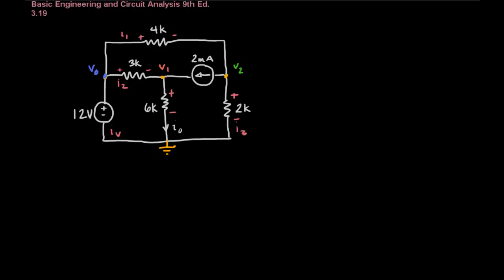So now we're ready to apply KCL. At V0, we don't really need to apply KCL in order to determine the node voltage because it's 12 volts. V0 equals 12 volts. And that's positive 12 volts because of the polarity on this voltage source here.